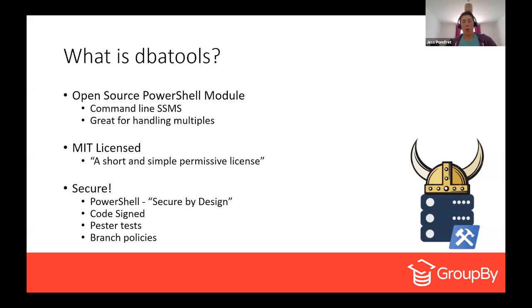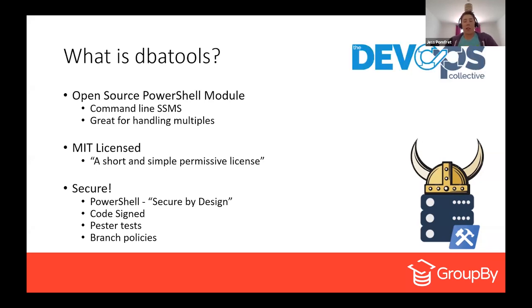That's really important as so many people are contributing — we don't want to break anything that people are already using. The DBA Tools team also uses branch policies on GitHub, so the master branch, which is what is published to the PowerShell gallery, is really locked down and only a few members can merge code into it. They then have the dev branch, which most people will work against. There are multiple levels of code review, checks, and approvals before code makes it into master. One more thing: DBA Tools was awarded the Git Grant recipient for 2020, recognized by the DevOps Collective and PowerShell.org as a great open source product for the year.